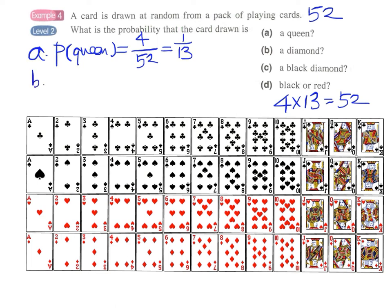And for part B, a diamond. And we can just count how many diamonds are here. We have 1, 2, 3, 4, of course we have 13 diamonds from ace to king. So therefore our answer will be 13 over 52 which is 1 over 4.